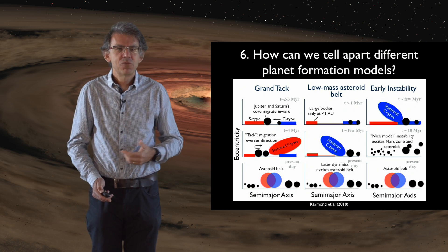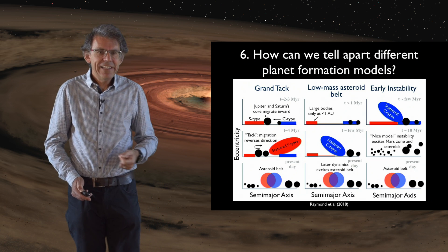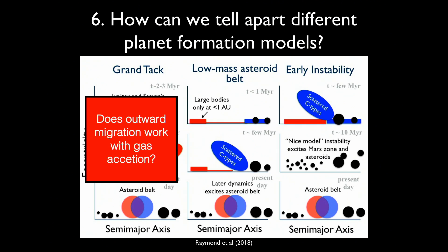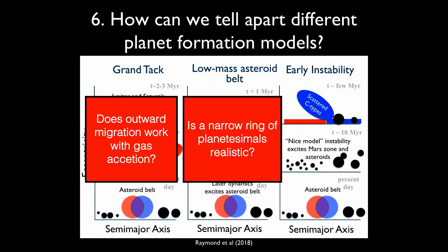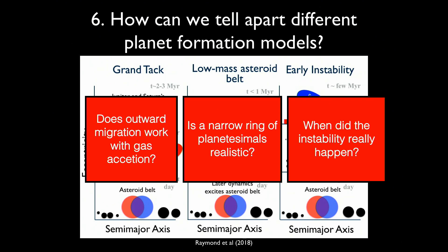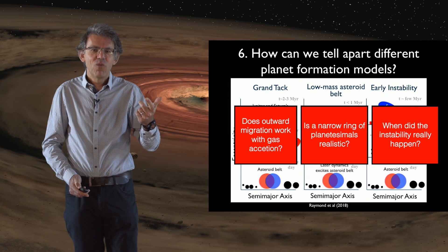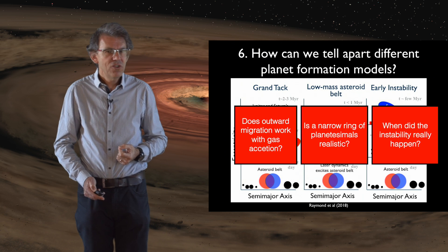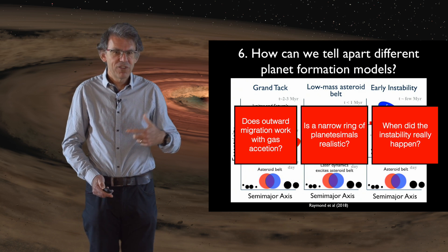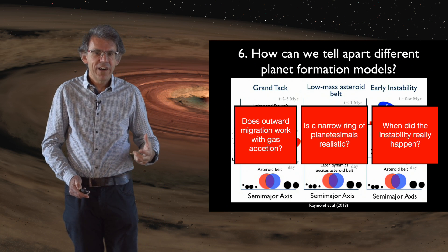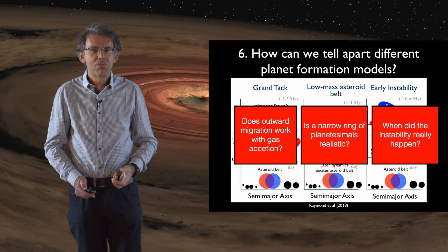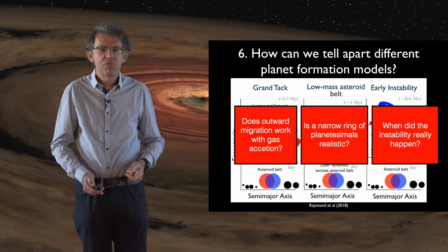To discriminate between these models we need to answer several questions. To validate or rule out the Grand Tack, we need to understand how outward migration really works when giant planets are still accreting gas. For the low-mass asteroid belt model, we need to understand if it is realistic that the first planetesimals only formed in a narrow ring around 1 AU and why. For the early instability model, we need to constrain the timing by examining solar system evidence, and compare model predictions of Earth's final composition with actual measurements of our planet's chemical and isotopic composition — requiring dynamical planet formation models to be coupled with geophysical and geochemical evolution models.